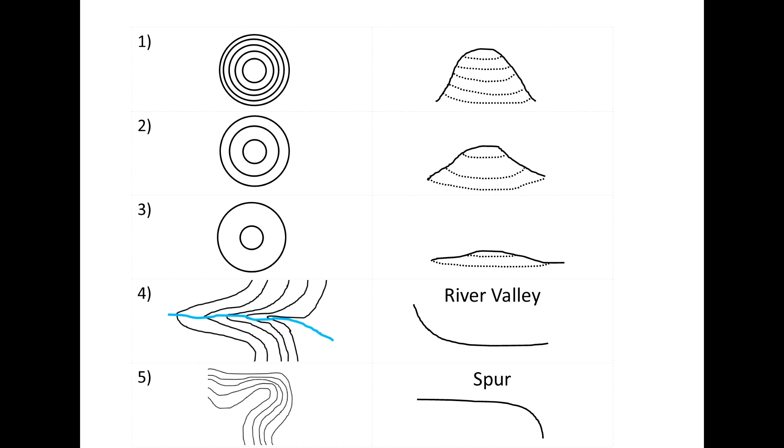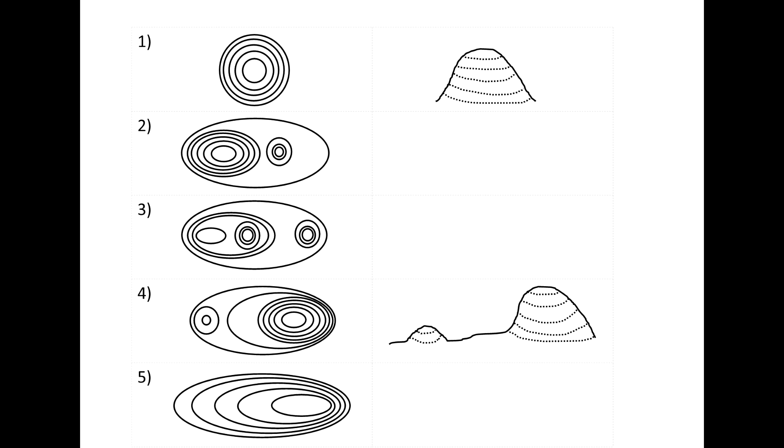Now, I've also included a few more examples of different types of profiles you might see. So if we look at 1 to 5, number 1, again, is an example that we've already seen before, where you see the contour lines fairly close together and you get a fairly steep hill.